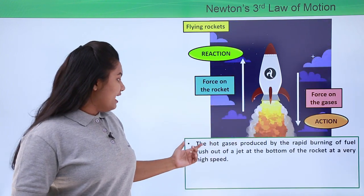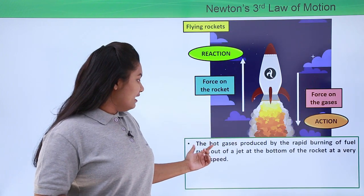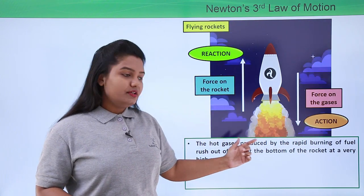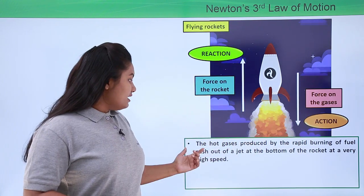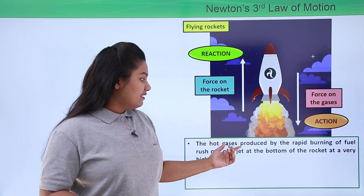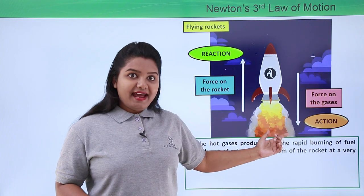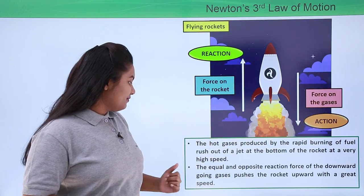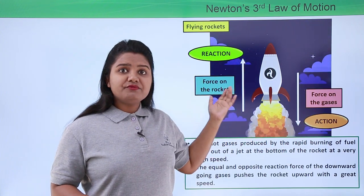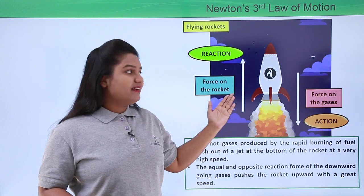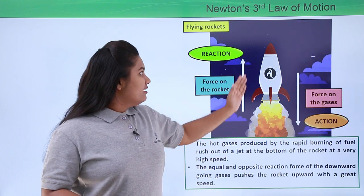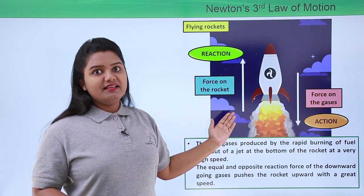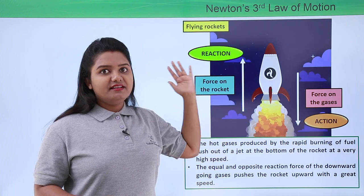The hot gases produced by the rapid burning of the fuel rush out of the jet at the bottom of the rocket at a very high speed, and an equal and opposite force acts upon the rocket, making it move in the upward direction.